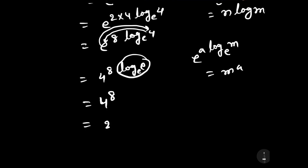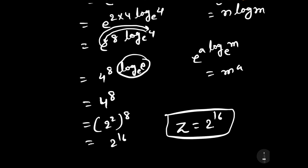4 to the power 8 can be written as 2 squared to the power 8, which equals 2 to the power 16. Therefore, z equals 2 to the power 16. This is our required solution. Thanks once again.